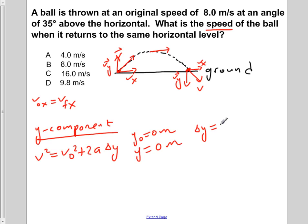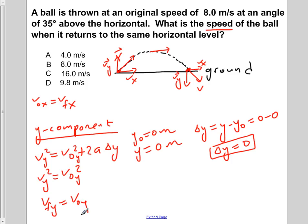If that is true, delta y equals y minus y0 would be 0 minus 0. So delta y would be equal to 0. This here shows us that our final velocity squared is equal to our initial velocity squared. And we're dealing with the y component, remember? So if we take the square root of this, V final y is also equal to V0y.